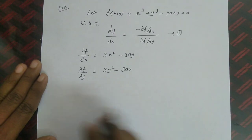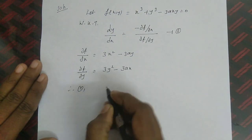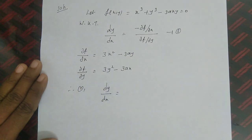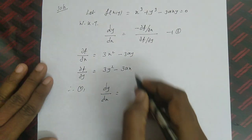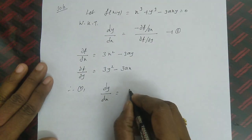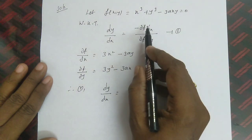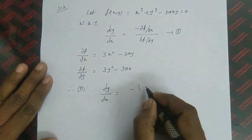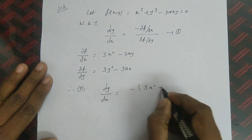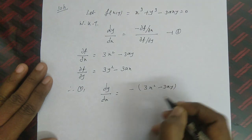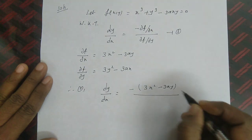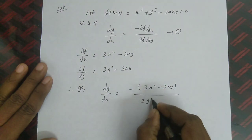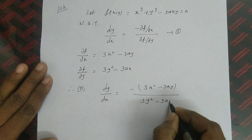Therefore from equation 1, dy/dx = -(∂f/∂x) / (∂f/∂y). We must not forget the minus sign in the formula. So dy/dx = -(3x² - 3ay) / (3y² - 3ax). Taking the minus inside and factoring out 3 from both numerator and denominator: dy/dx = (ay - x²) / (y² - ax).